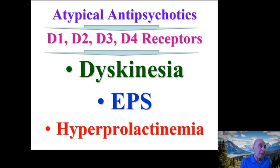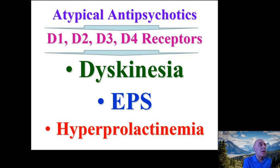Atypical antipsychotics can also interact with D1, D2, D3, and D4 receptors, which leads to side effects such as dyskinesia, extrapyramidal symptoms, and hyperprolactinemia — an increase in serum prolactin levels.